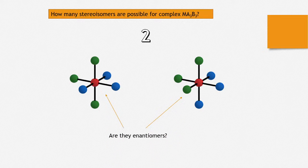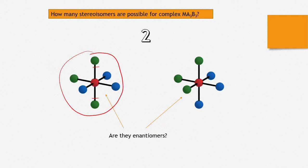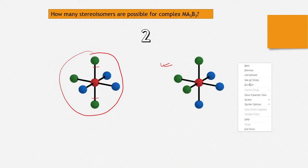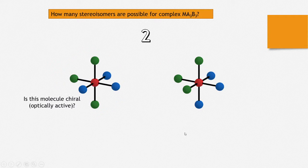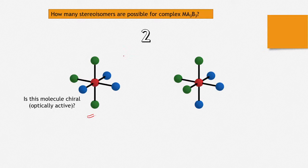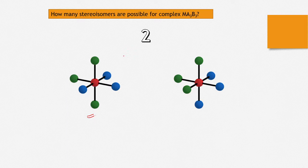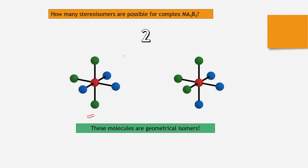Are they enantiomers? Of course not — if they were enantiomers, they would have to be mirror images of each other. If you take the mirror image of this molecule, then the two greens should be opposite in the mirror image too, but they are not opposite here. So they are not mirror images. Also, is the first molecule optically active or chiral? If you take the mirror image and try to superimpose it, you will find the mirror image turns out to be superimposable. So this molecule is not chiral — neither is the other one. These molecules are not optical isomers.